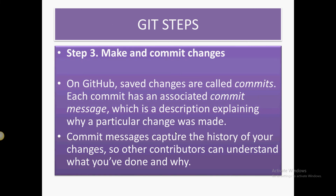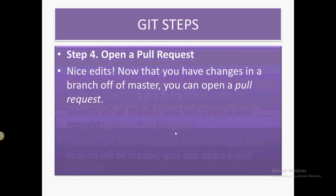Once all the steps are done, the final thing is to commit the changes on GitHub. All saved changes are called commits, and whenever you commit, you put a message so that a developer can recognize what the last commit was and why it was done.